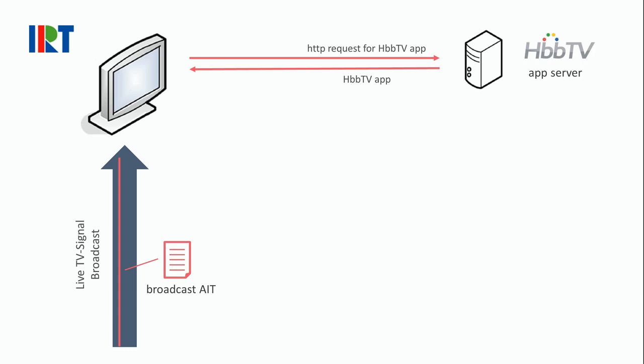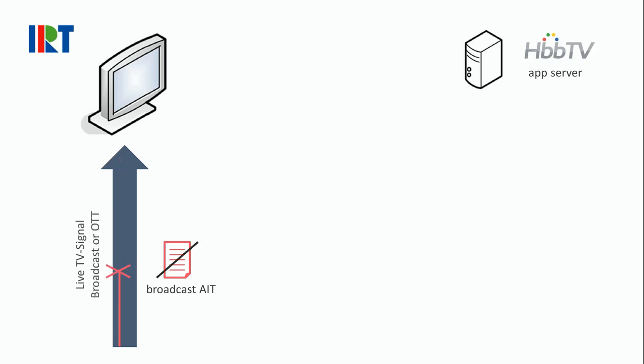This way of launching HbbTV applications does not work if the transmission of the AIT does not work. This can be the case if a cable operator blocks the AIT, or in OTT live streaming where an AIT transmission is technically not foreseen at all. How can HbbTV applications be started even in such cases?